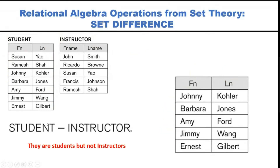Now, what is the English meaning of this query? The general sense is: these are students but not instructors. For example, Ramesh and Susan are both students and instructors. If I want only students who are not instructors, in relational algebra I simply write 'student minus instructor' — it gives all students who are not instructors.